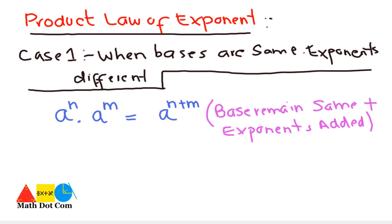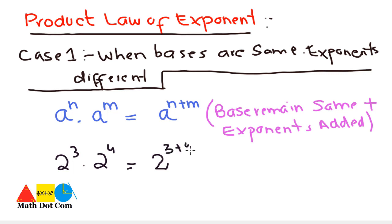Let's take an example. If we have 2 raised to power 3 and 2 raised to power 4, how do you solve them? When taking their product, keep in mind that in the product law you are multiplying two numbers in exponential form. We write the base once and add the exponents: 3 plus 4, giving us 2 raised to power 7.